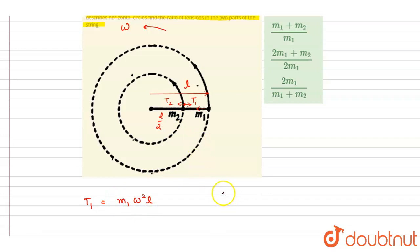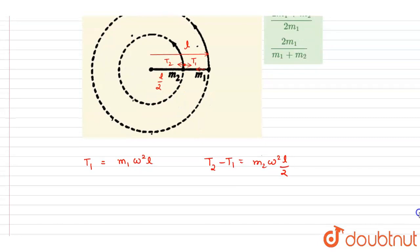And m2, the net force toward the center is T2 minus T1 equals m2 omega squared l by 2.